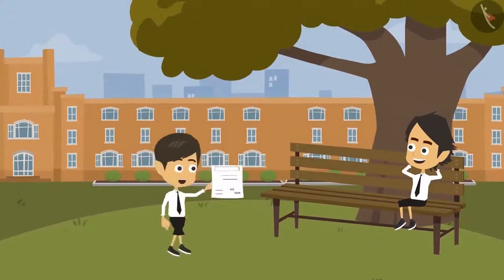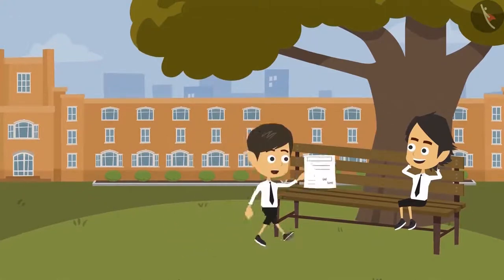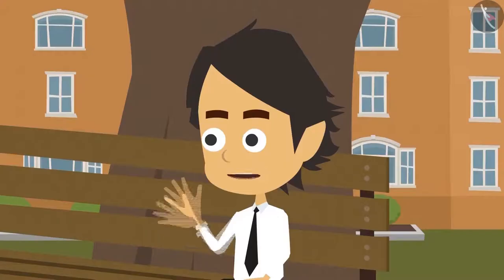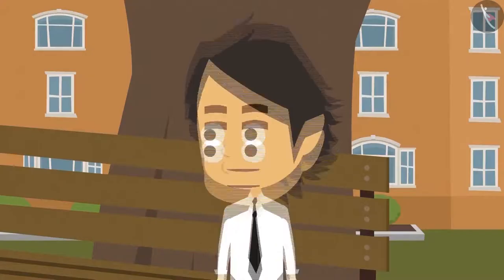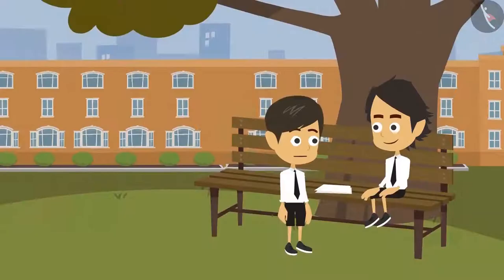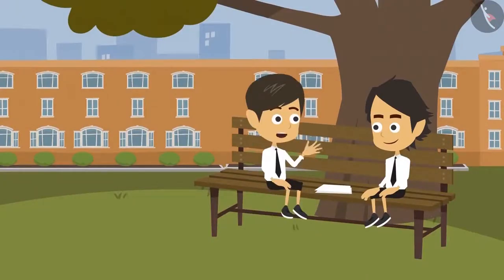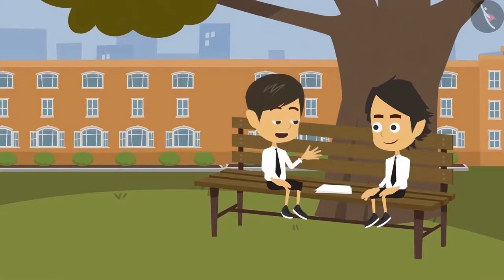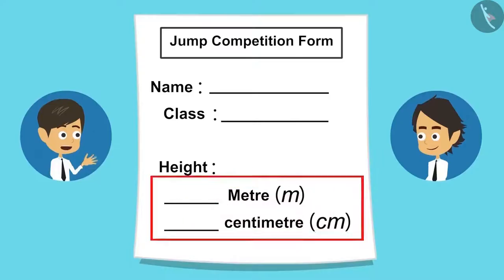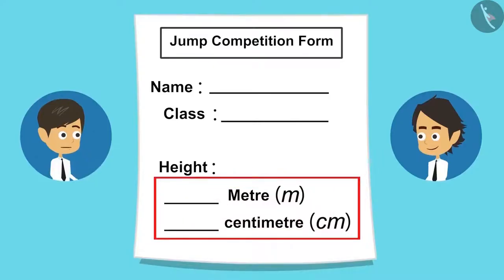Ayushman, the teacher has given this form. We have to write our height in this so that she can put us in the correct group. But what is the relation between our height and long jump? It is possible that tall people can jump longer, so groups are made as per people's height. Ayushman, height is to be written in meters and centimeters in this form.